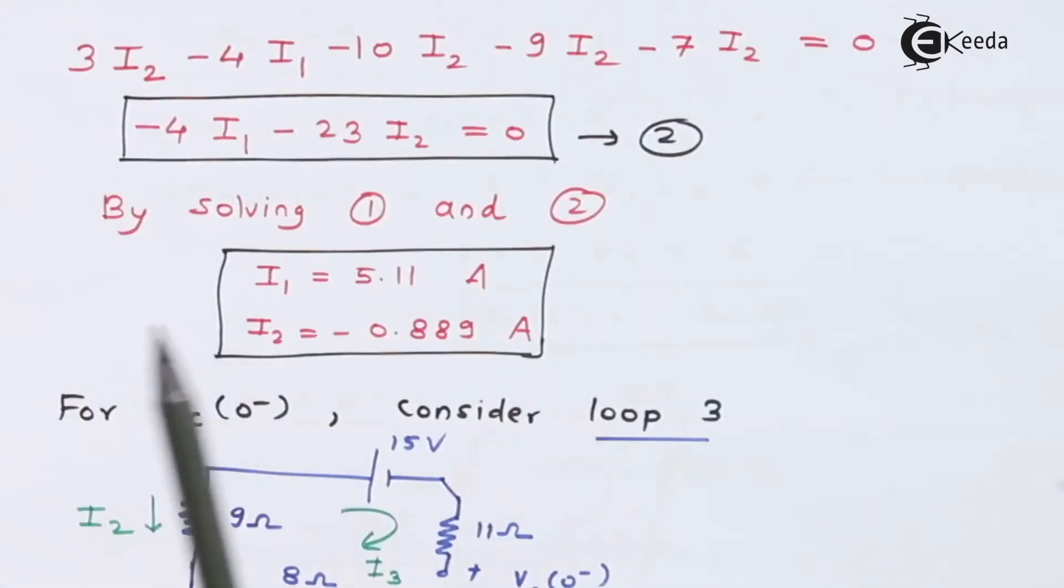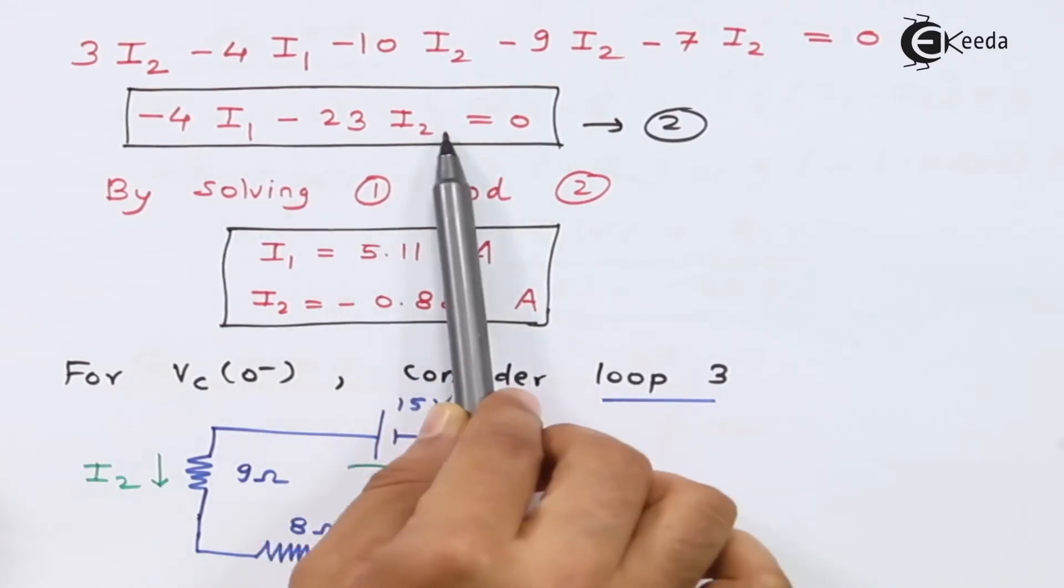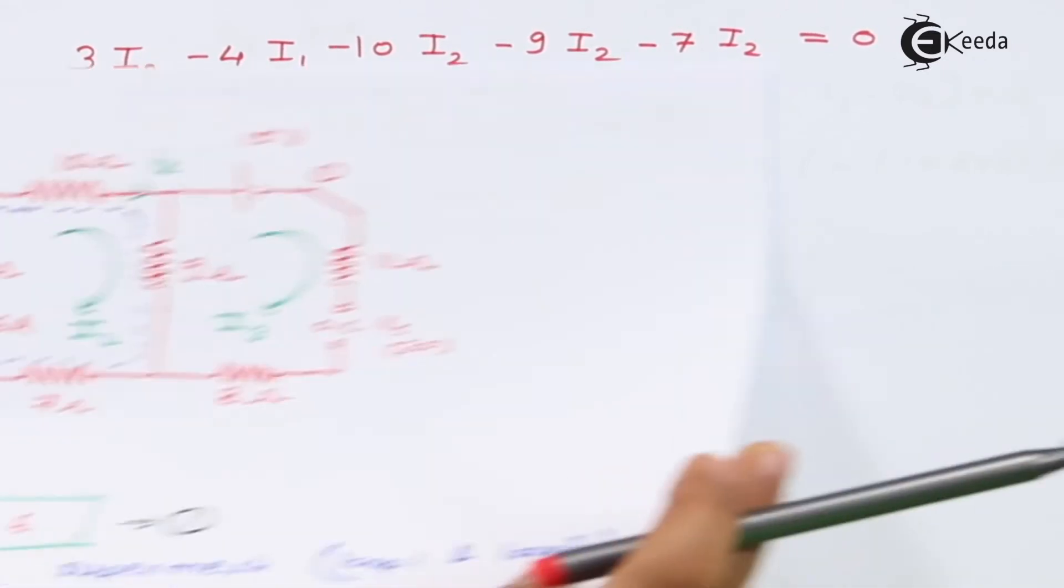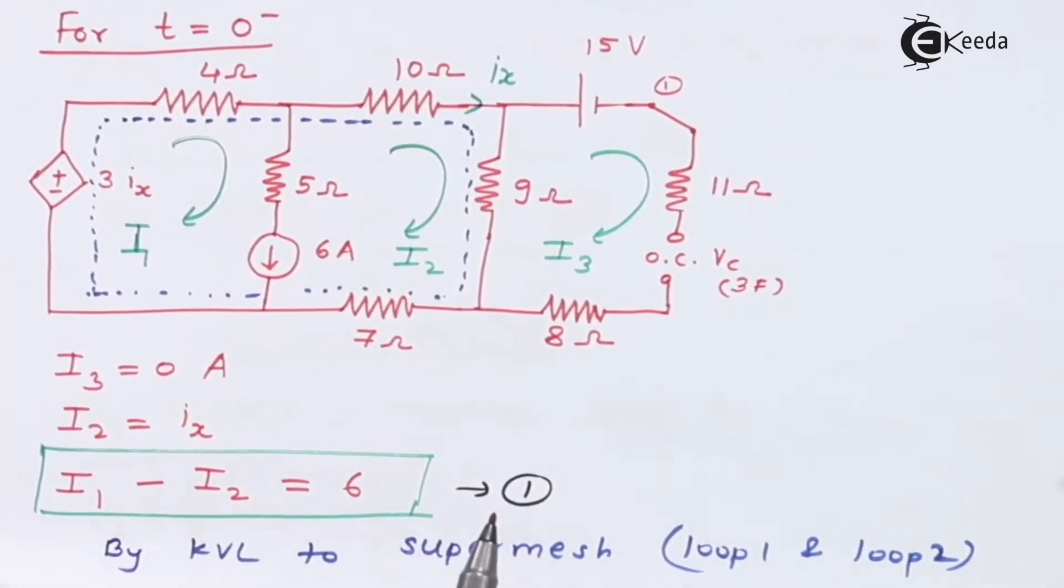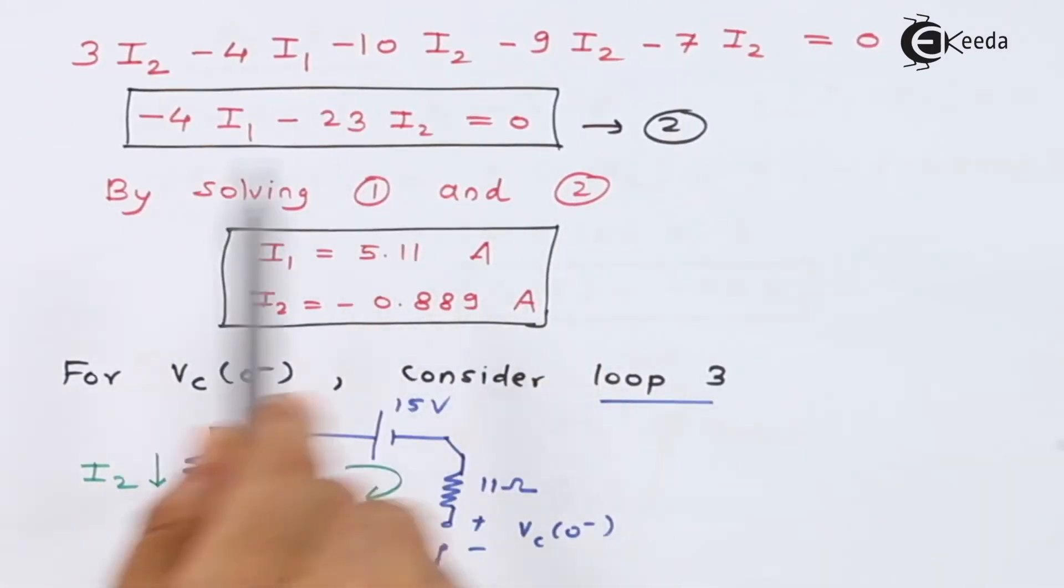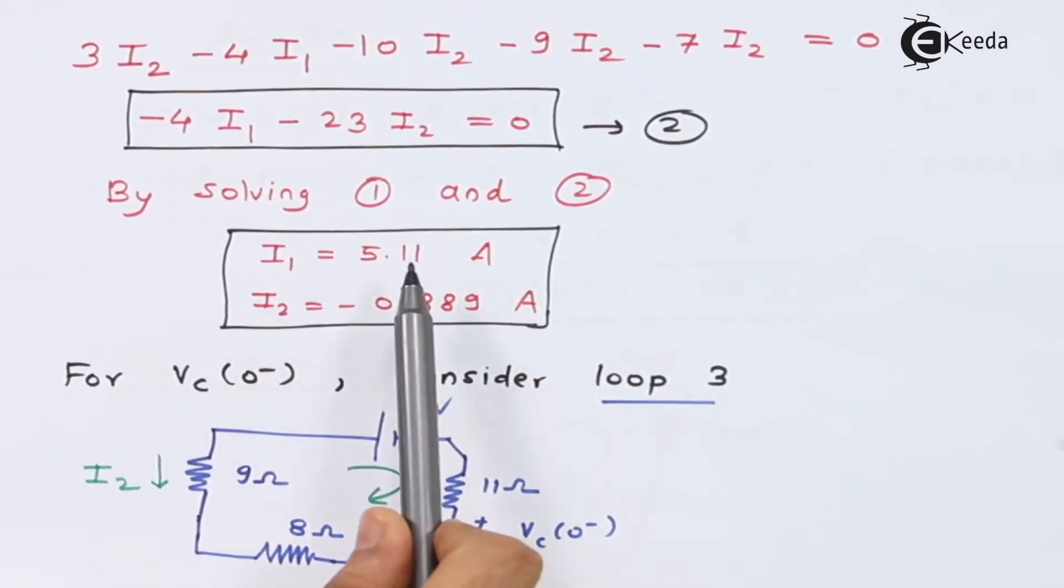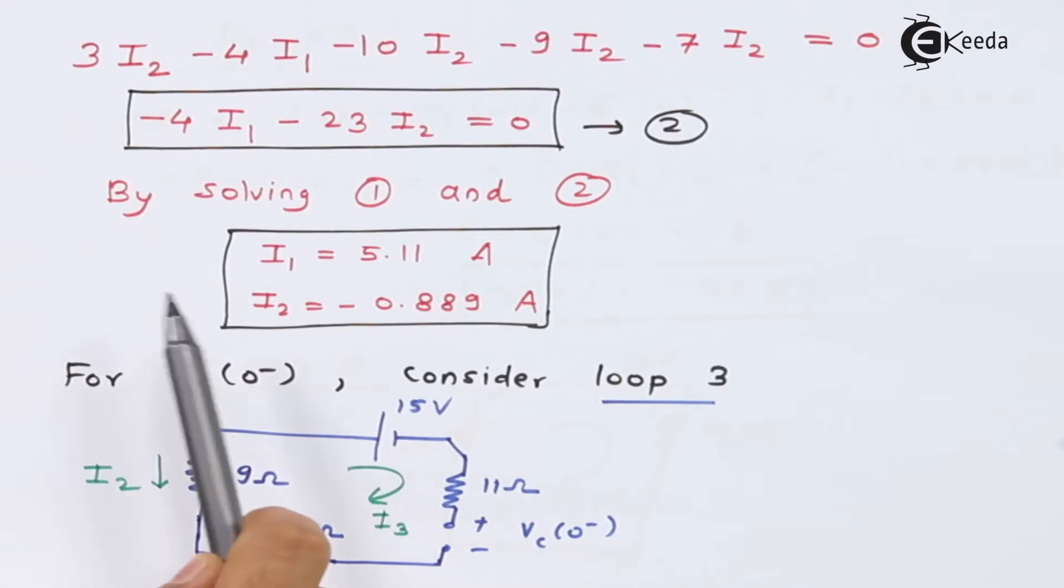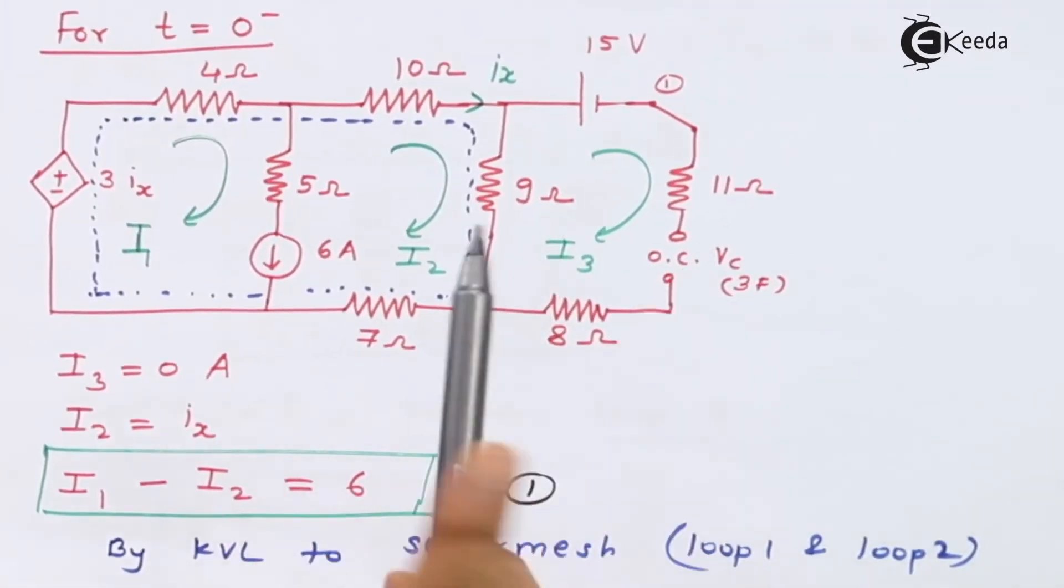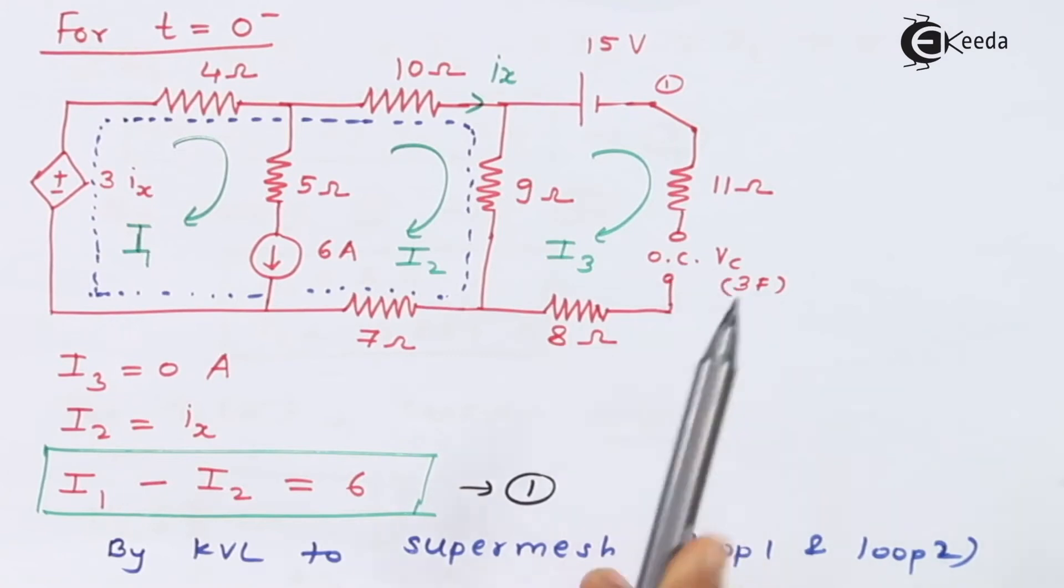When I solve this, I get equation number 2 which is of this form. Now I have equation number 1 as well as equation number 2. By solving them I get I1 equal to 5.11 ampere and I2 equal to minus 0.889 amperes. So I1 and I2 are done. Now the question is what is the voltage across this capacitor, this is Vc.